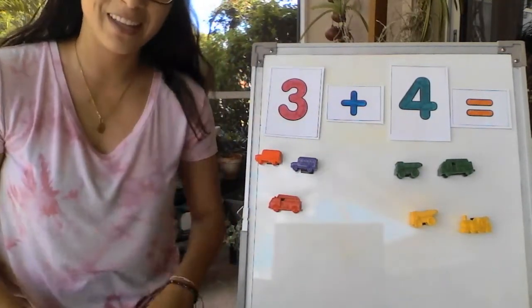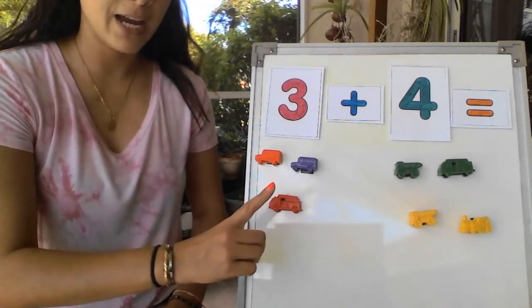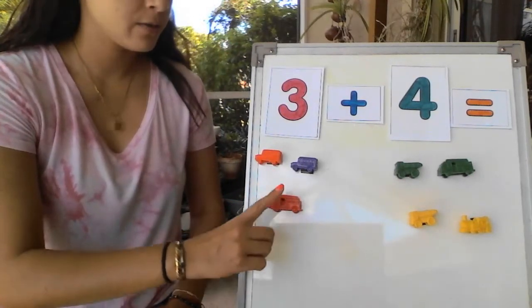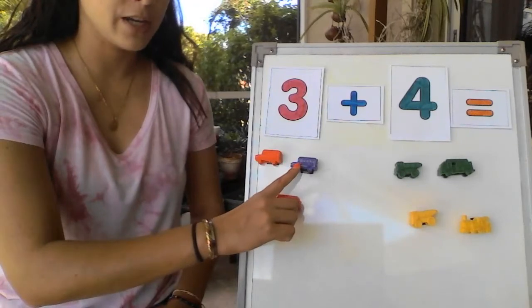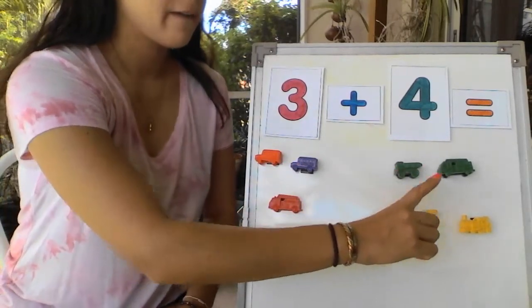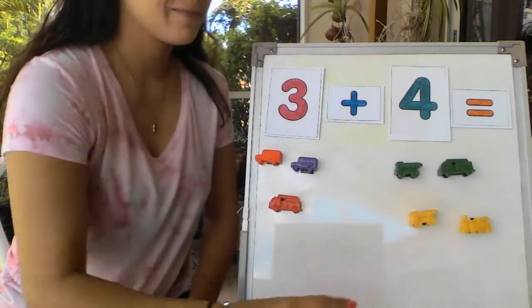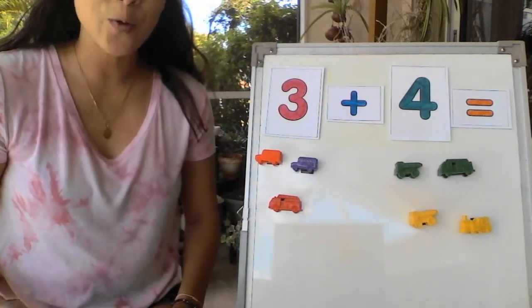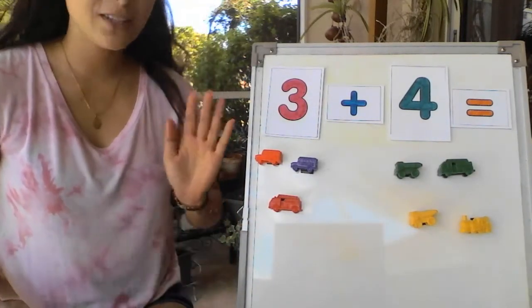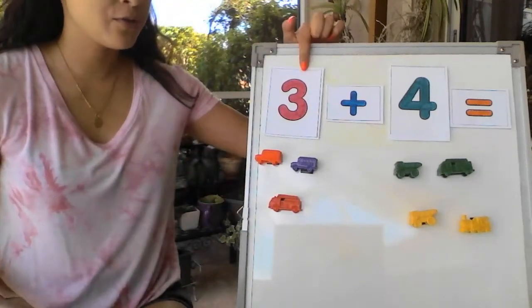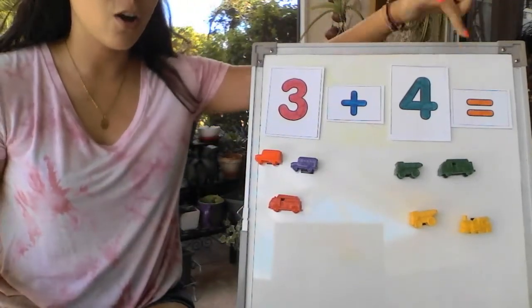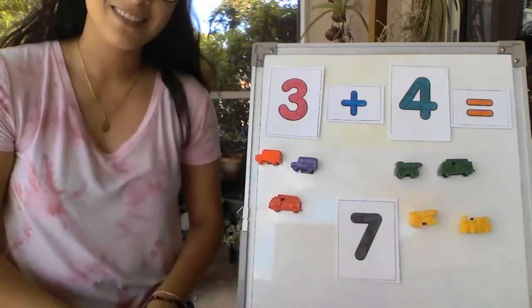Now I'm going to count all the vehicles together. Ready? Count with me. Using your finger we have 1, 2, 3, 4, 5, 6, 7. No matter how we do it. What strategy we use. 3 plus 4 always equals 7.